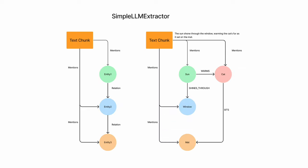The next extractor is the simple LLM extractor. Given a text chunk, we use an LLM to extract entities and relationships. For example, we extract entities and their relationships from a text chunk, and these entities have mentions from the text chunk. Using the example sentence 'The sun shone through the window warming the cat's fur as it sat on the mat', we extract four entities: sun, cat, window, and mat. There are relationships between these four entities, and these entities have been extracted from the text chunk with mentions noted. That's how we use an LLM to extract entities and relationships using the simple LLM extractor.